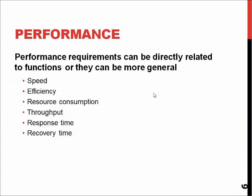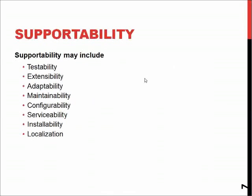In many cases, especially in industry, performance is an important aspect because speed, efficiency, and even resource consumption are sometimes directly related to how much profit we can make with the software. Supportability means how much money we have to spend on keeping the system operational — how easy it is to maintain, how easy it is to adapt to a new platform, how easy it is to test, localize, or install the new system. These aspects affect how much money you have to spend on support or selling your product to new customers.